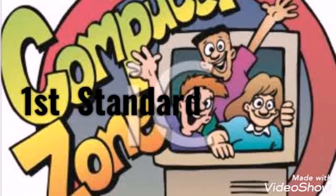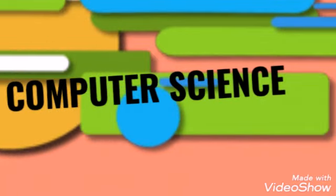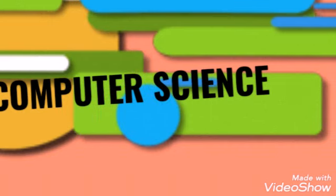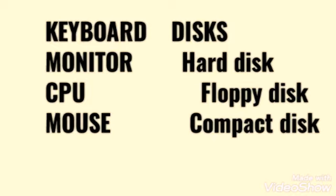Hi kids, good morning all of you. Let us discuss our chapter — the first chapter, Introduction to Computer. We are going to study the last portion of the first chapter. We already studied keyboard, monitor, mouse, and also some disks: hard disk, floppy disk, compact disk. Do you remember our portions? Now let us start our new portion.